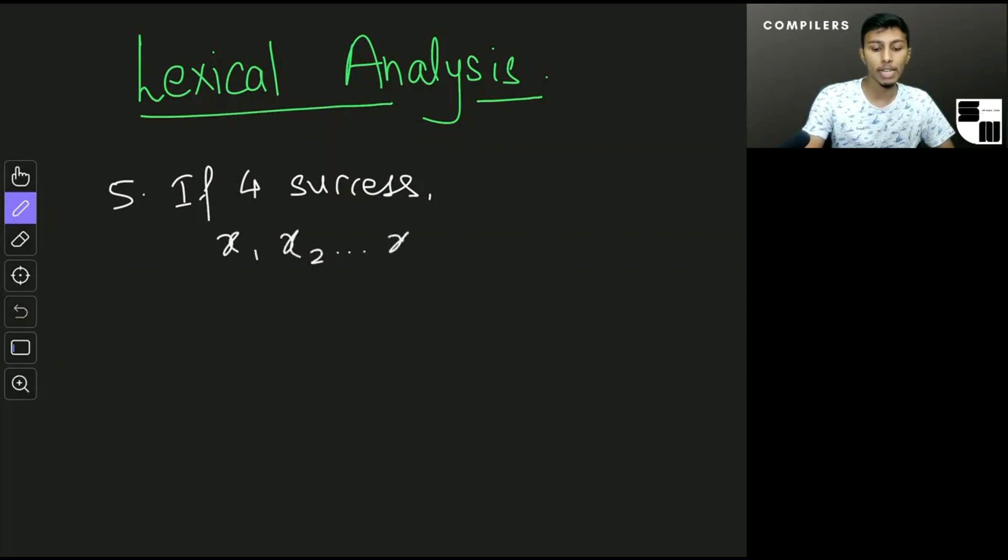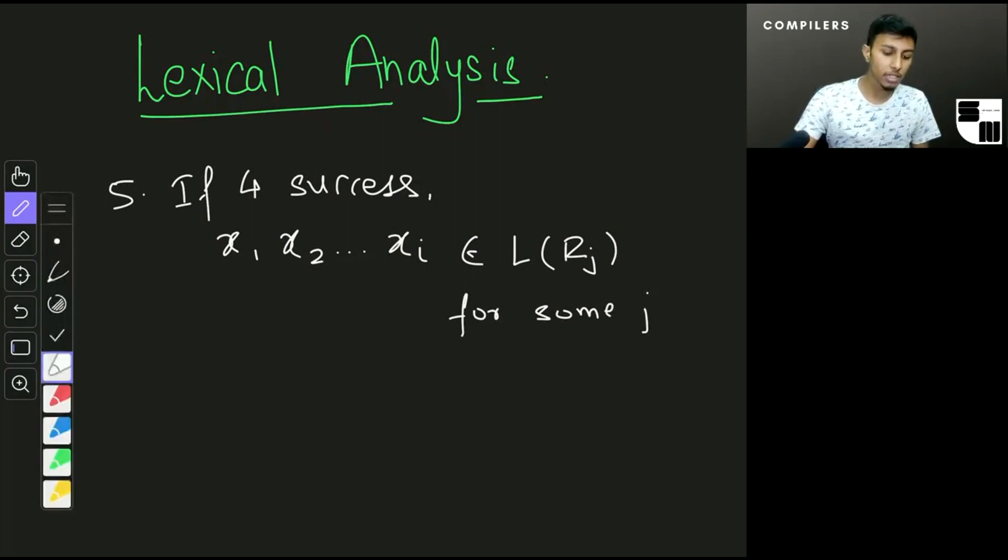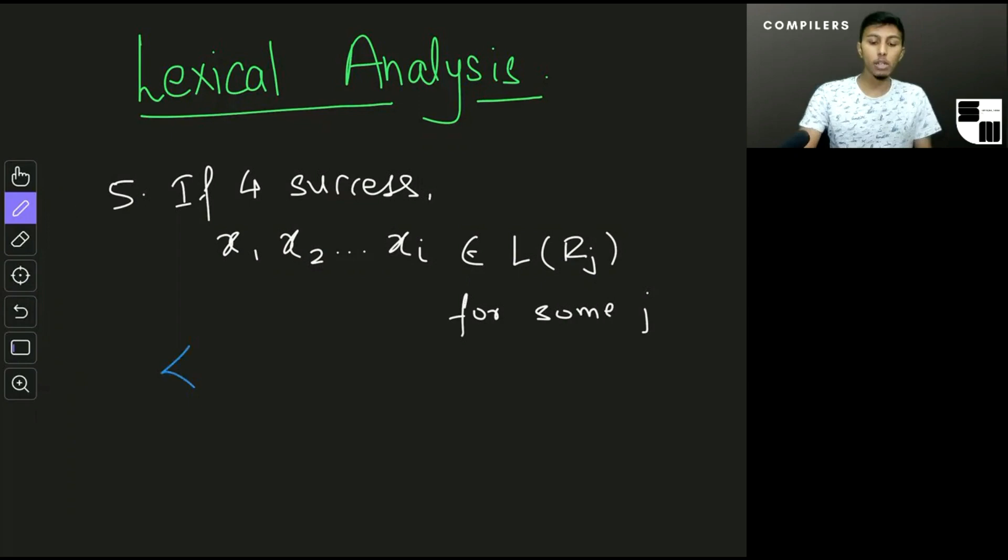So x1, x2 and so on up to xi from step 4, see that it belongs to the language represented by some Rj. So it belongs to L of Rj for some j. And at this point what we have is a token because we know that L of Rj will, we probably have given it some name.